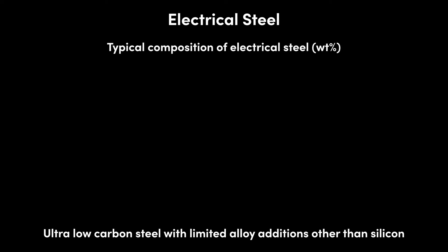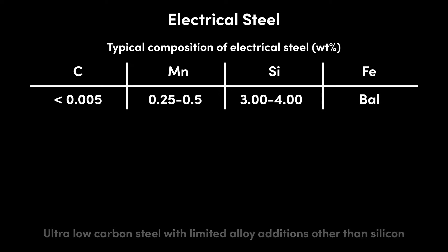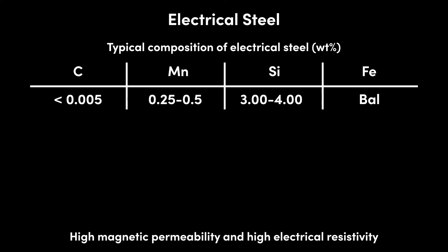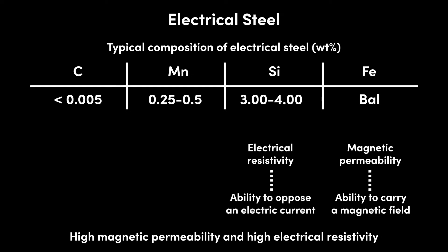Electrical steel is an ultra low carbon steel, typically with less than 0.005% carbon and alloyed primarily with silicon at 3 to 4%, hence why it's sometimes called silicon steel. Additional alloy elements are seldom used, typically with a maximum of just 0.5% manganese. The main design philosophy behind electrical steel is to provide a combination of high magnetic permeability and high electrical resistivity. Magnetic permeability is the ability with which a material can carry a magnetic field, while electrical resistivity is the ability with which a material can oppose an electric current.